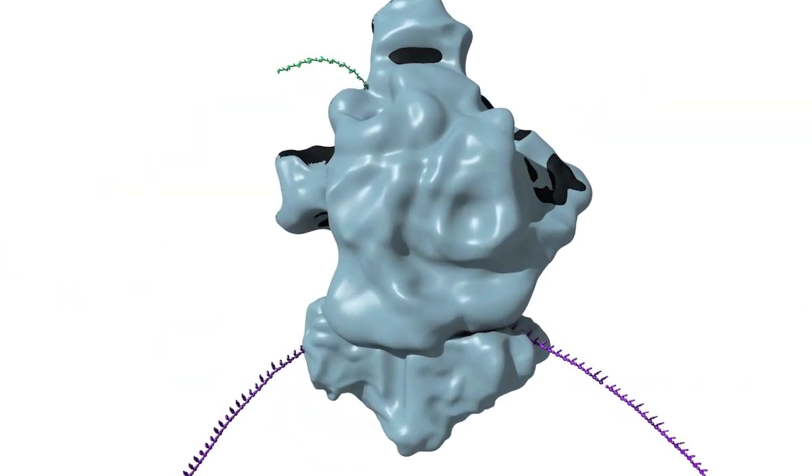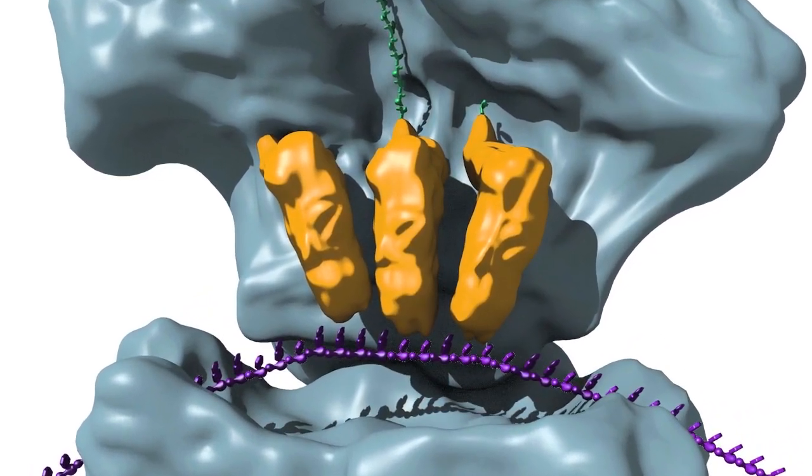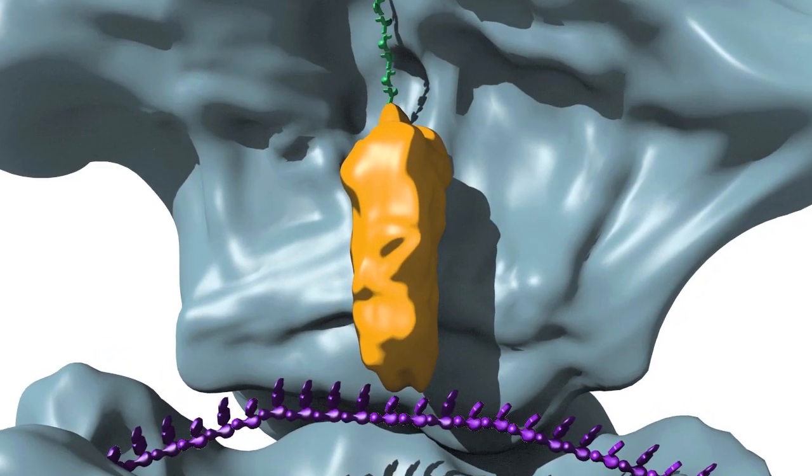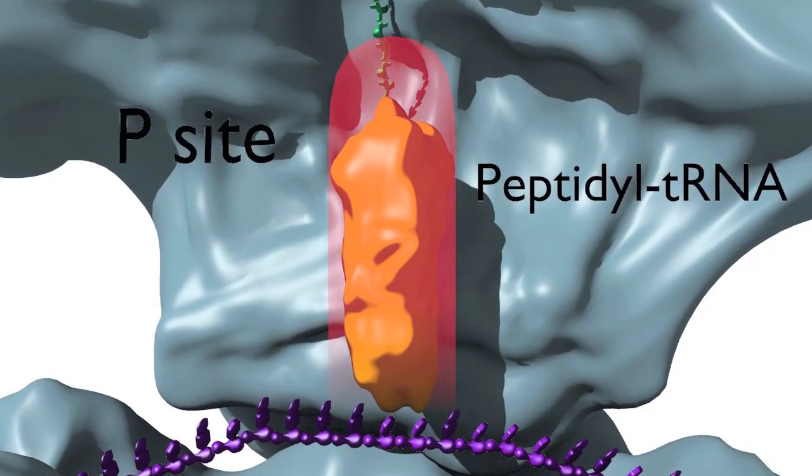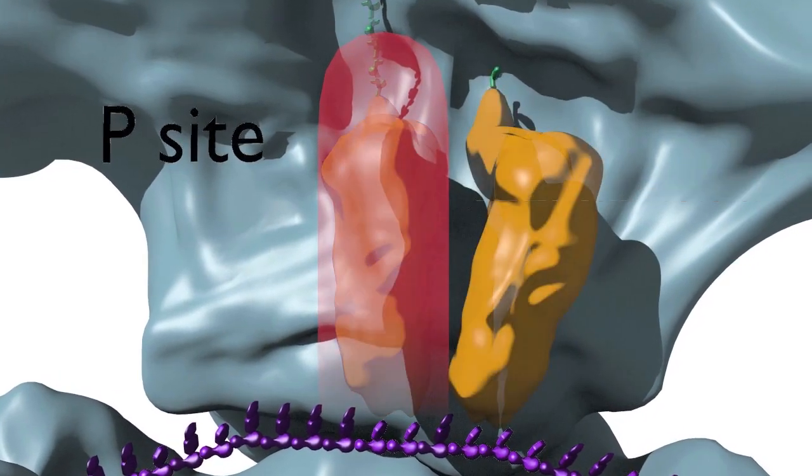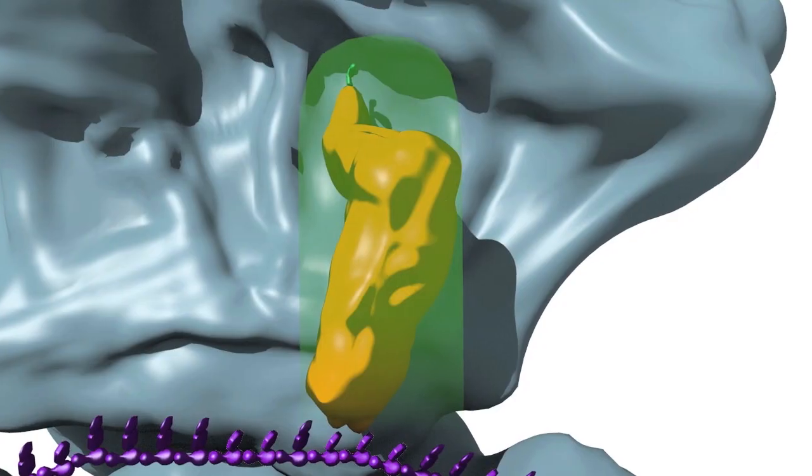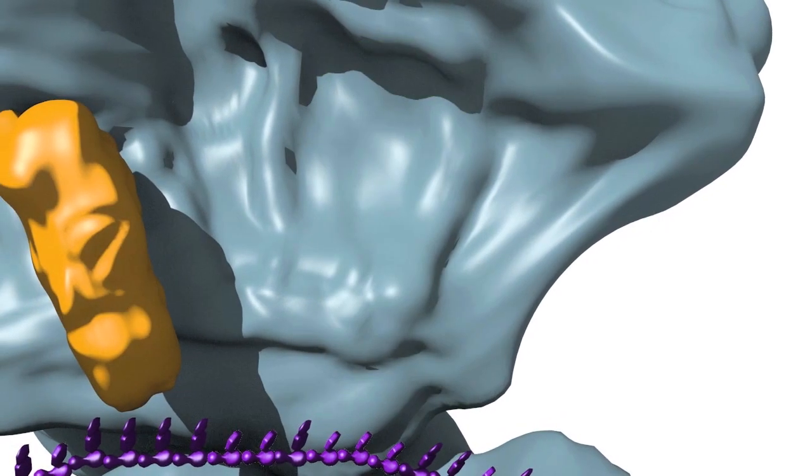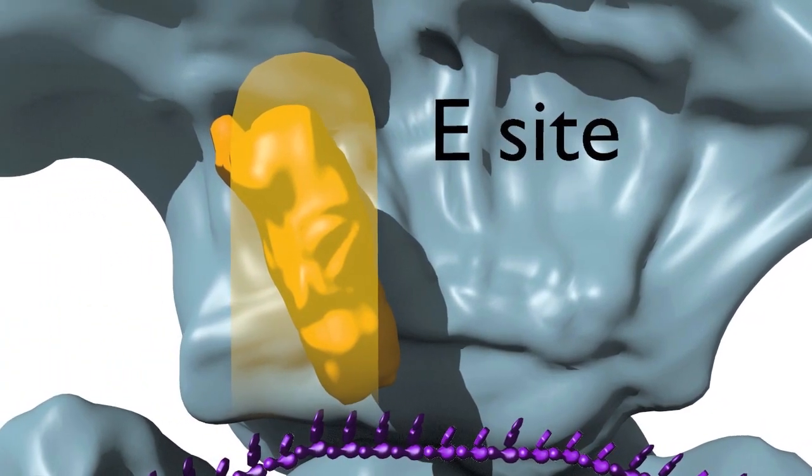The ribosome has binding sites for three different tRNAs. One tRNA is always bound in the central most position in the ribosome and carries the growing polypeptide chain. We refer to this tRNA as the peptidyl tRNA. It's bound in the P site of the ribosome. The incoming tRNA with the new amino acid to be incorporated binds adjacent to the P site in a site referred to as the A site for aminoacyl tRNA. There is a third binding site, the E or exit site, where the tRNA binds on its way out of the ribosome following the incorporation of its amino acid into the polypeptide chain.